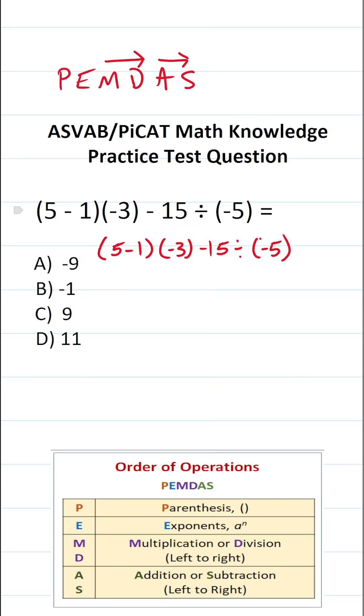As we look at this expression, you should see that we do have something in parentheses, notably 5 minus 1. So that's the very first thing we're going to work on. 5 minus 1 is 4.